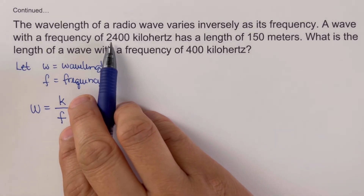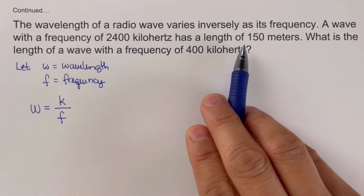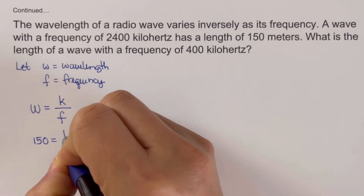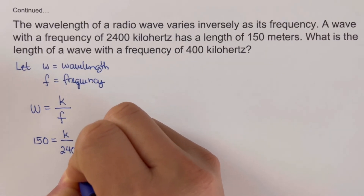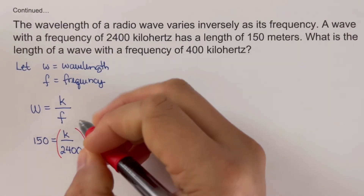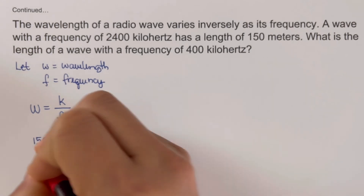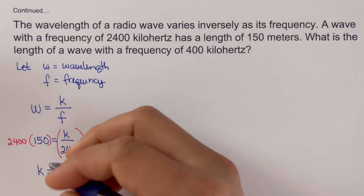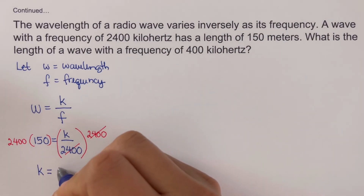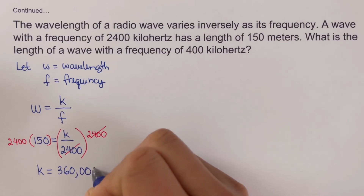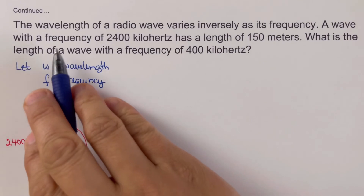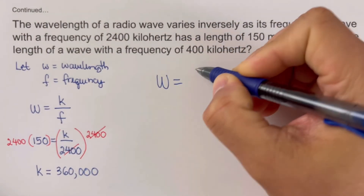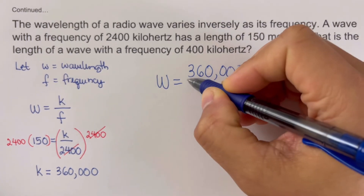We are given that the frequency is 2400 and the wavelength is 150 meters, so we plug those in: 150 equals k over 2400. We solve for k by multiplying both sides by 2400, giving us k equals 360,000. So our working equation for this problem is w equals 360,000 divided by f.